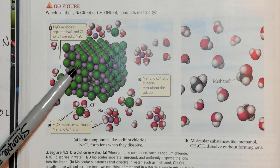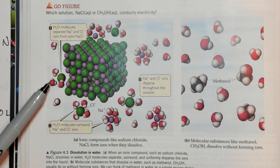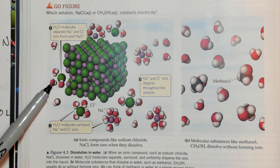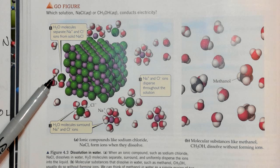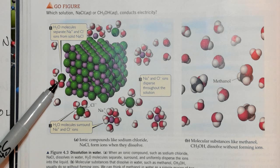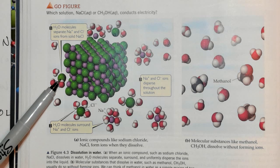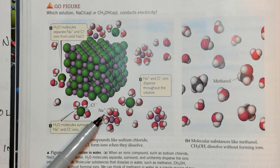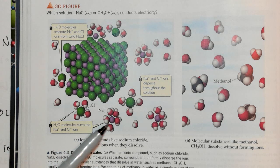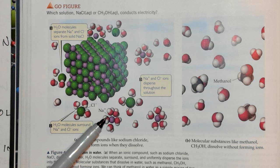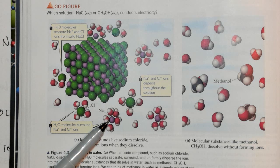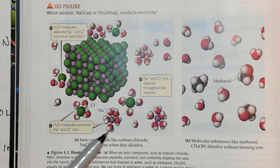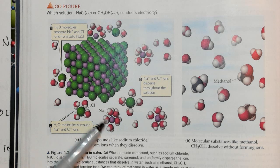And you'll notice that the positive part of the water molecules, the little white parts that represents the hydrogens, surround the chlorines. And you'll notice that the red parts, the negative parts, surround the positively charged sodium ions when they're solvated or pulled apart in solution.